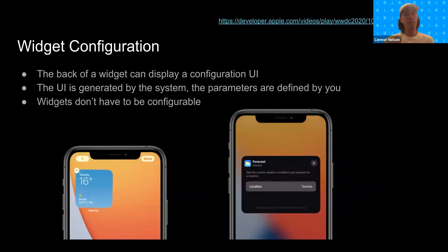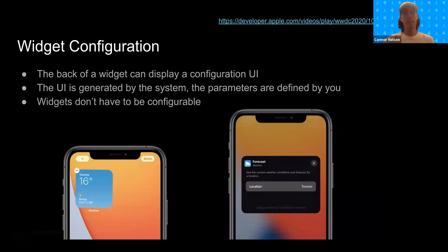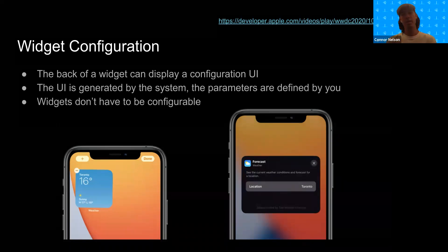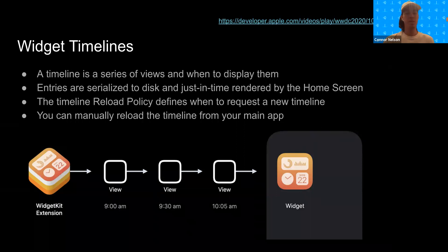Widgets can also be configurable. If a widget is configurable, then the back of the widget will display a configuration UI. This UI is going to be generated by the system, but the configurable parameters are going to be defined by you. Additionally, these widgets don't have to be configurable if you don't want them to be. However, every widget does need a timeline — basically a series of entries, where every entry is primarily made up of a view and a time at which to display that view, as you can see in the diagram.